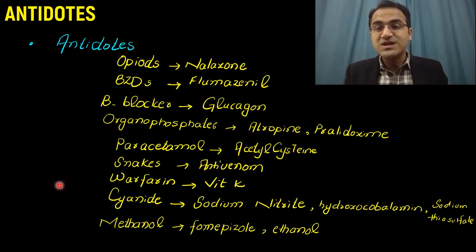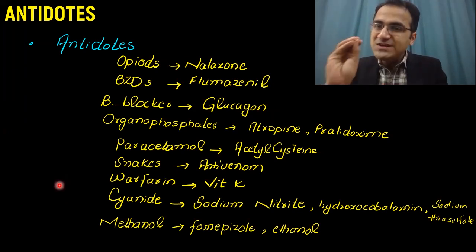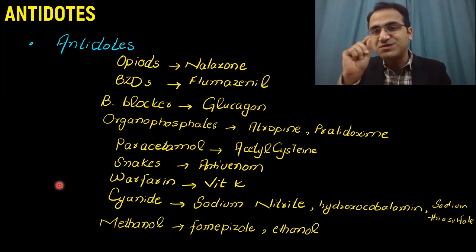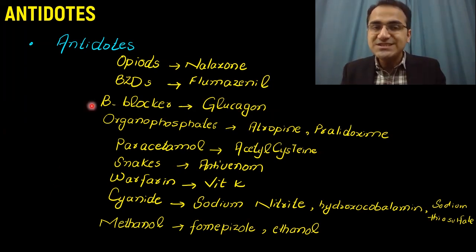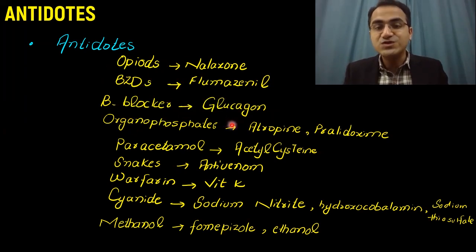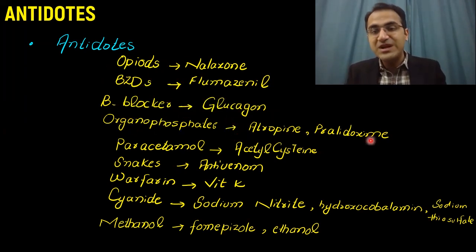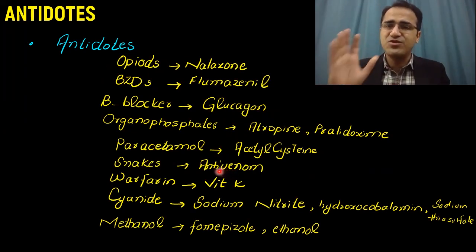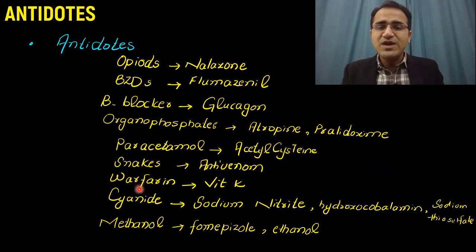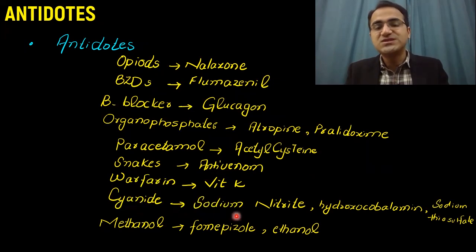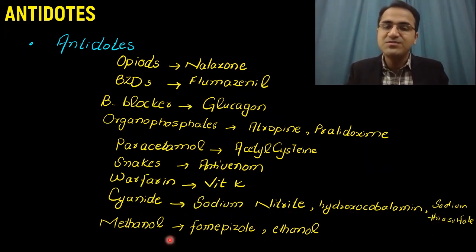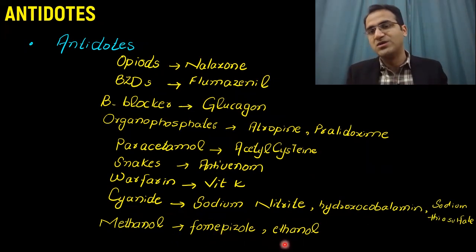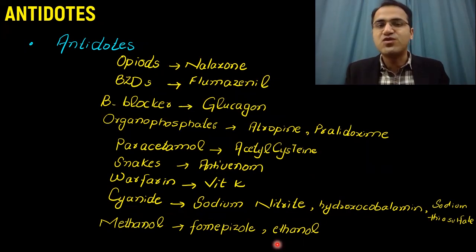Coming to antidotes. When you have identified the poison via toxicology screen or history, you can use specific antidotes. For opiates use naloxone; benzodiazepines use flumazenil; beta blocker use glucagon; organophosphorus use atropine and pralidoxime; paracetamol use acetylcysteine; snake poisoning use antivenom; warfarin use vitamin K; cyanide use sodium nitrite or hydroxocobalamin and sodium thiosulfate; methanol use fomepizole or ethanol.